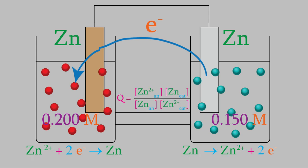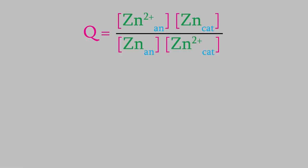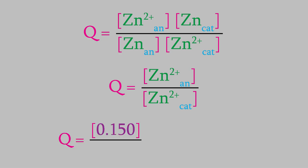As you might remember, we drop every solid out of the equilibrium expression, which leaves us with this. Now we'll just plug in our concentration data. Remember, the zinc ion in the numerator is from the solution on the right, which has a concentration of 0.150 molar. Meanwhile, the concentration of the other zinc solution belongs in the denominator, with a concentration of 0.200 molar.